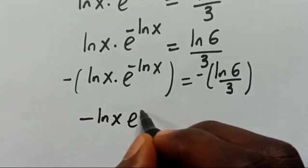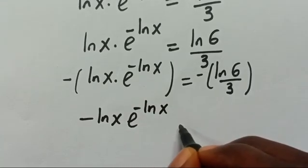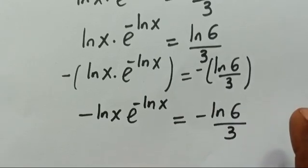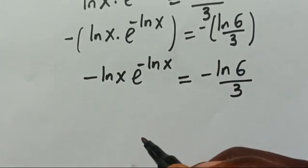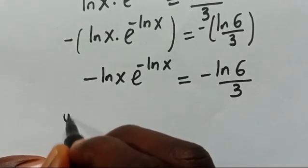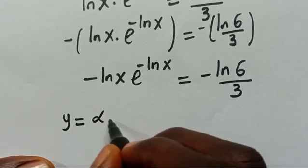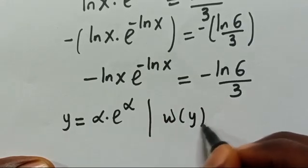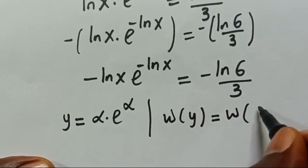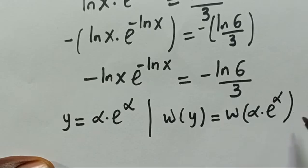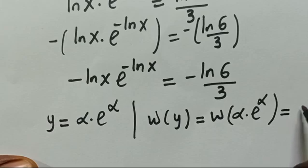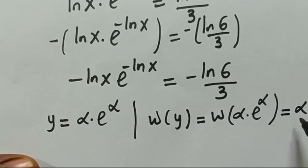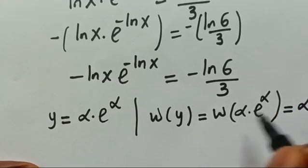Now we use the Lambert W function, which states: if y equals alpha multiplied by e to the power of alpha, then W(y) equals W(alpha times e to the power of alpha), which gives back alpha — because whenever the base and the power are the same, the output is that value.